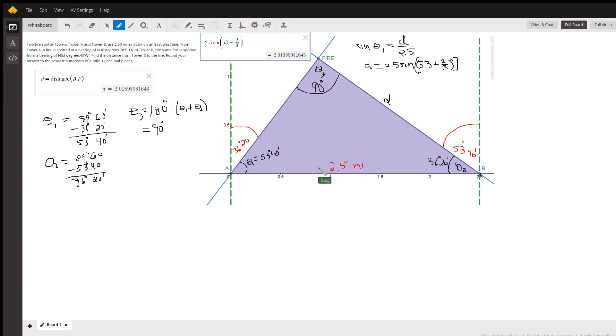Theta sub 2, well the bearing of the fire from tower B is north 53 degrees 40 minutes west. So theta sub 2 is 36 degrees 20 minutes because we can subtract from 90.